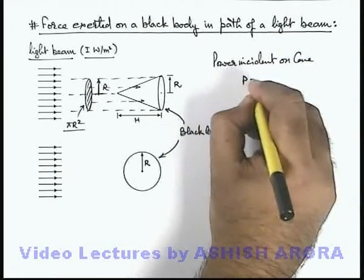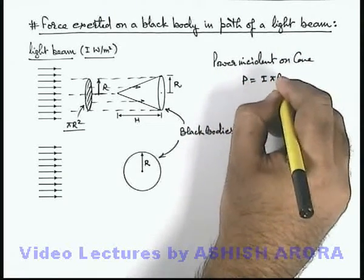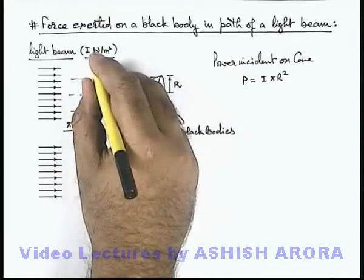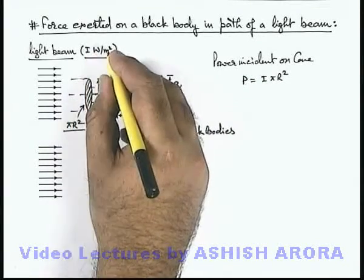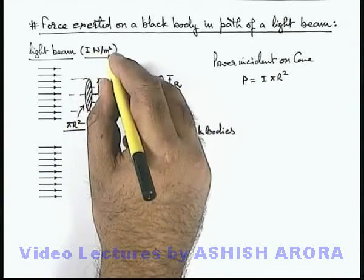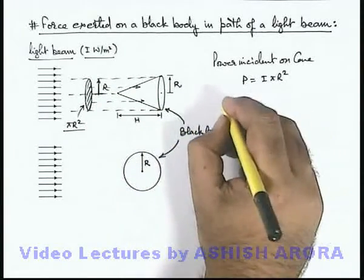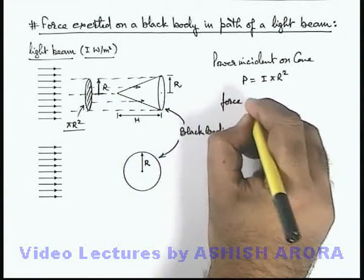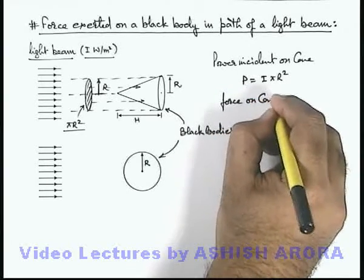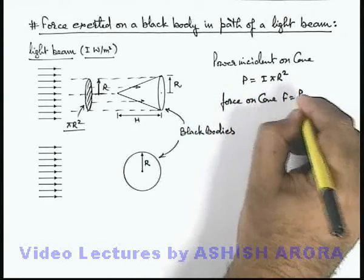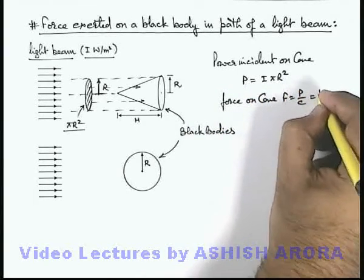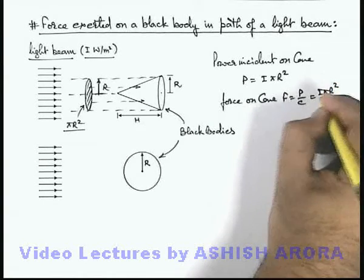Then this power can be directly written as Iπr² because I is the intensity per unit normal area. This is the power per unit normal area which is incident on it. So if this is the power, we can directly write the force exerted on the cone due to the light beam as P/c. So here it is Iπr²/c.